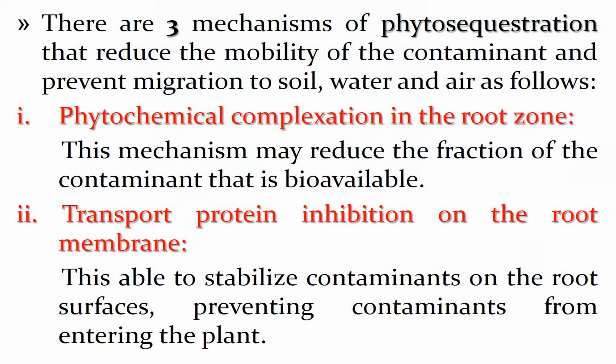The first sub-mechanism is phytochemical complexation in the root zone. In this mechanism, the fraction of the contaminant that is bioavailable to microorganisms is reduced, so the contaminant is not available to microorganisms. The second sub-mechanism is transport protein inhibition on the root membrane, which stabilizes the contaminant on the root surface and prevents contaminants from entering the plant, keeping them in the soil area.